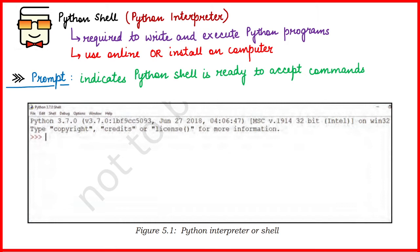When you install Python on your computer, a default development environment called IDLE gets installed on your system. IDLE is both a Python interpreter and a development environment in which you can write your code and execute your program — and this is the Python shell we'll be talking about today.